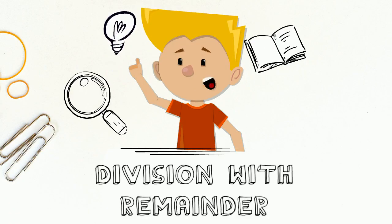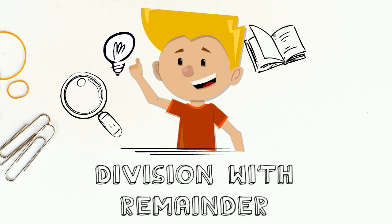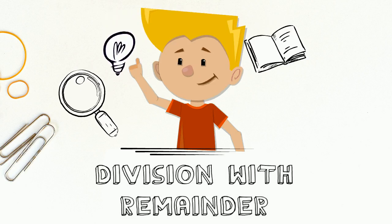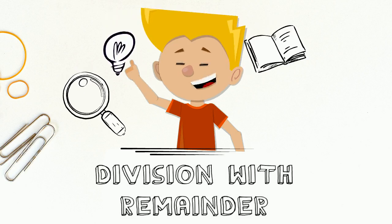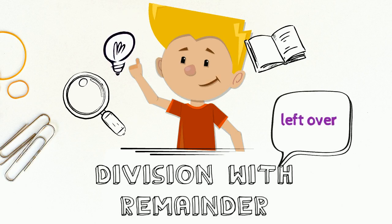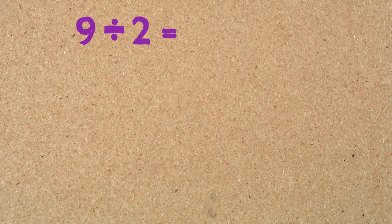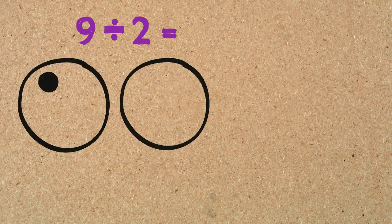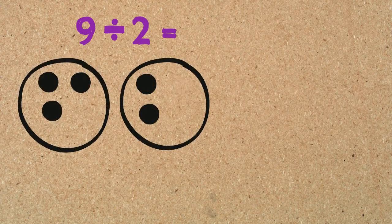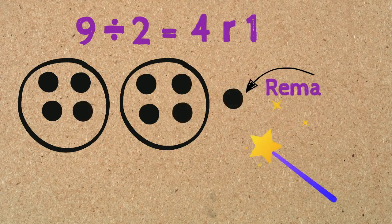Today we are learning about division with remainder. What is a remainder? It is the portion of the dividend that is left over after division, and that remainder is always smaller than the divisor. For example, if we want to divide 9 into 2 equal groups, there will be 4 in each group and there will be 1 remainder. We write the answer as 4 remainder 1, and that 1 is the leftover.